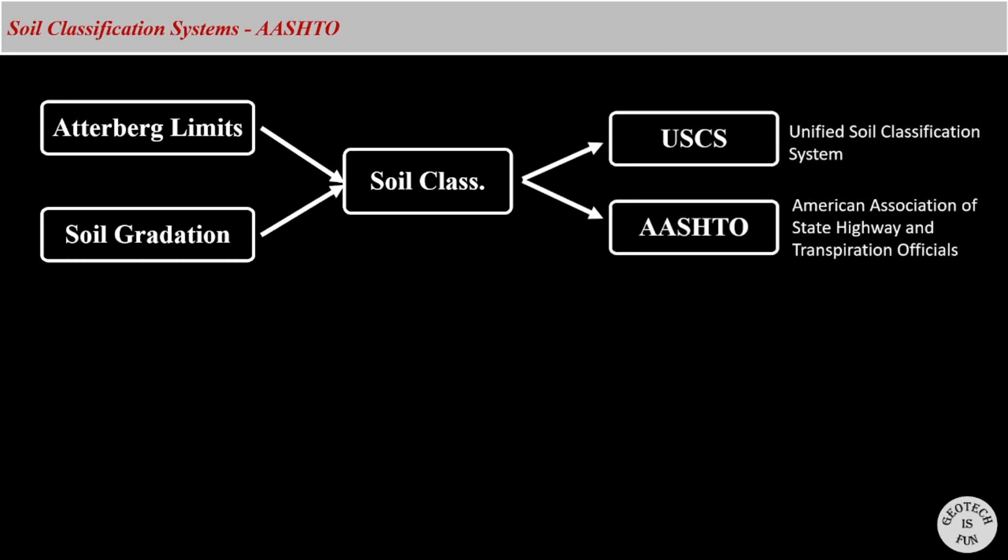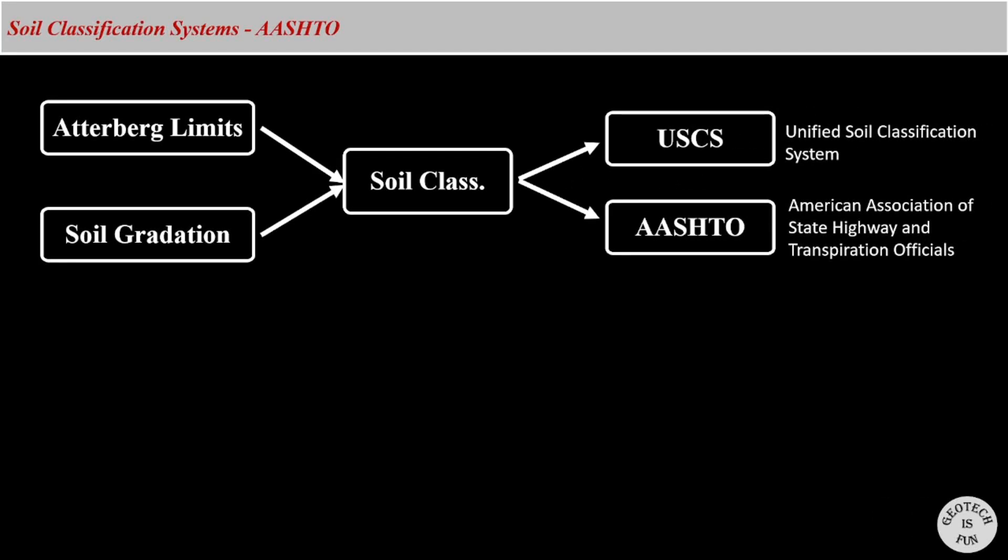There are primarily two classification systems, USCS and AASHTO. USCS is mainly used on most of the projects that involve highways and buildings. However, the AASHTO system is primarily used in the highway design projects.